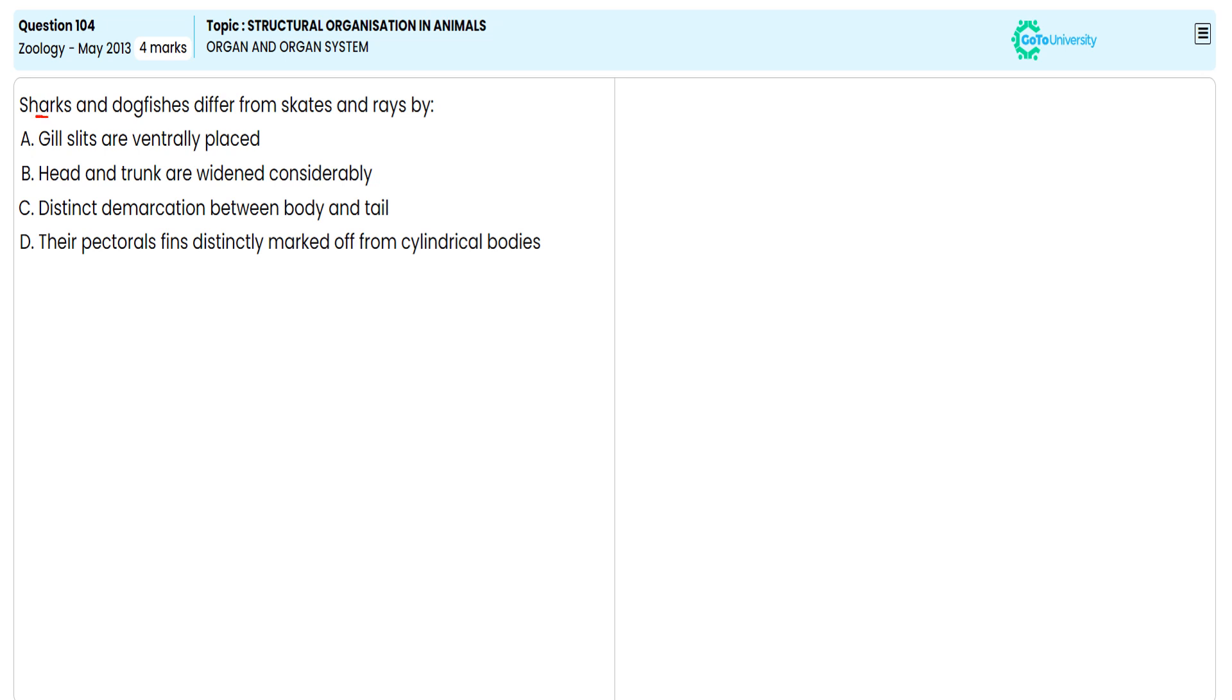In this objective question, we are directed to choose the correct option illustrating how sharks and dogfish differ from skates and rays. We are specifying that Pleurotremata includes sharks and dogfish.